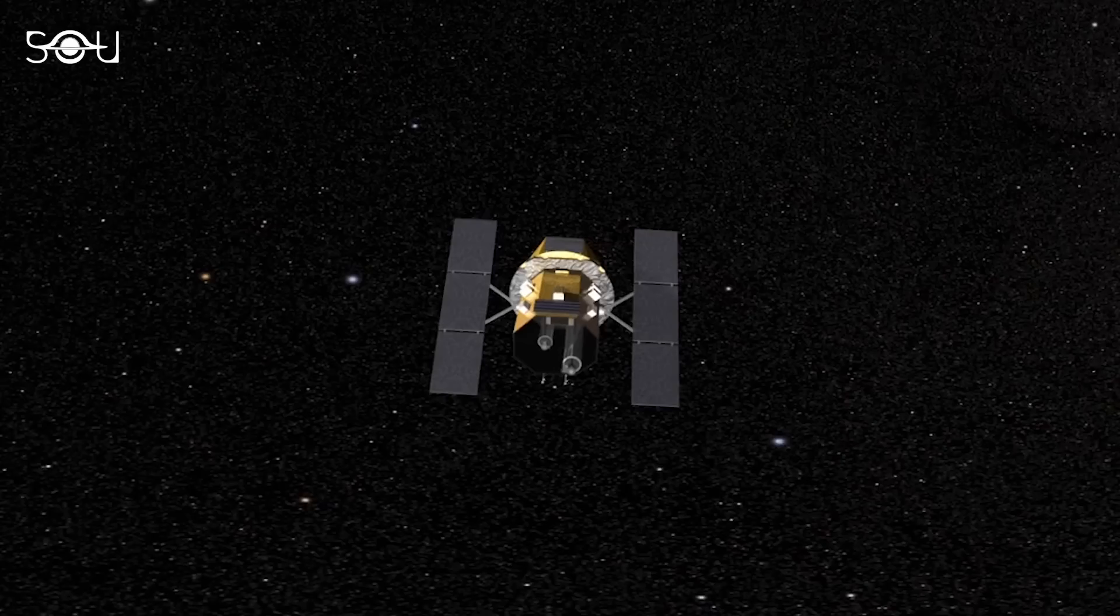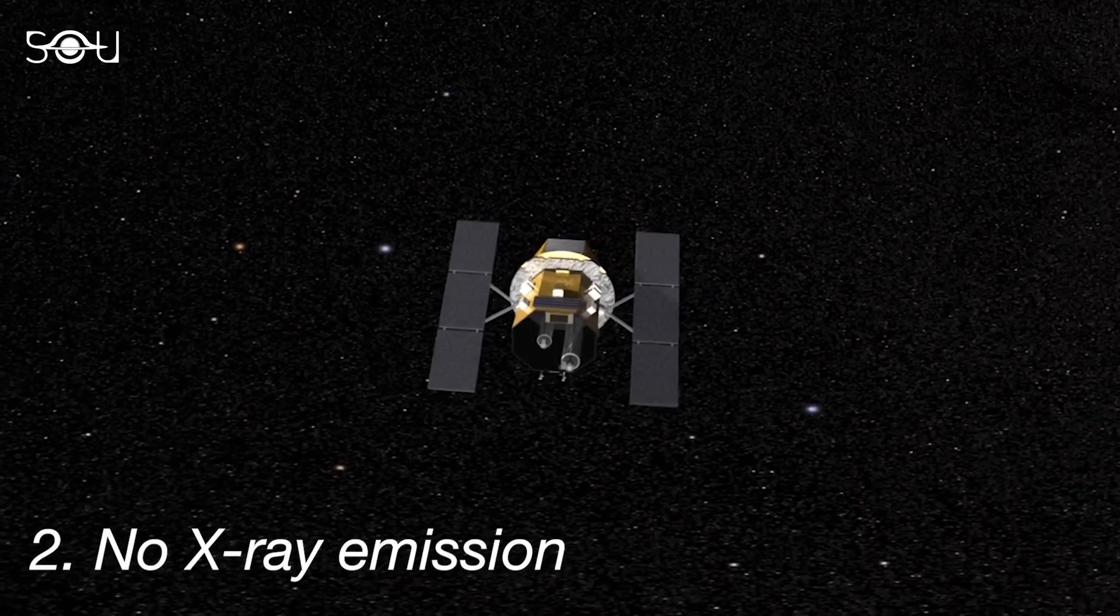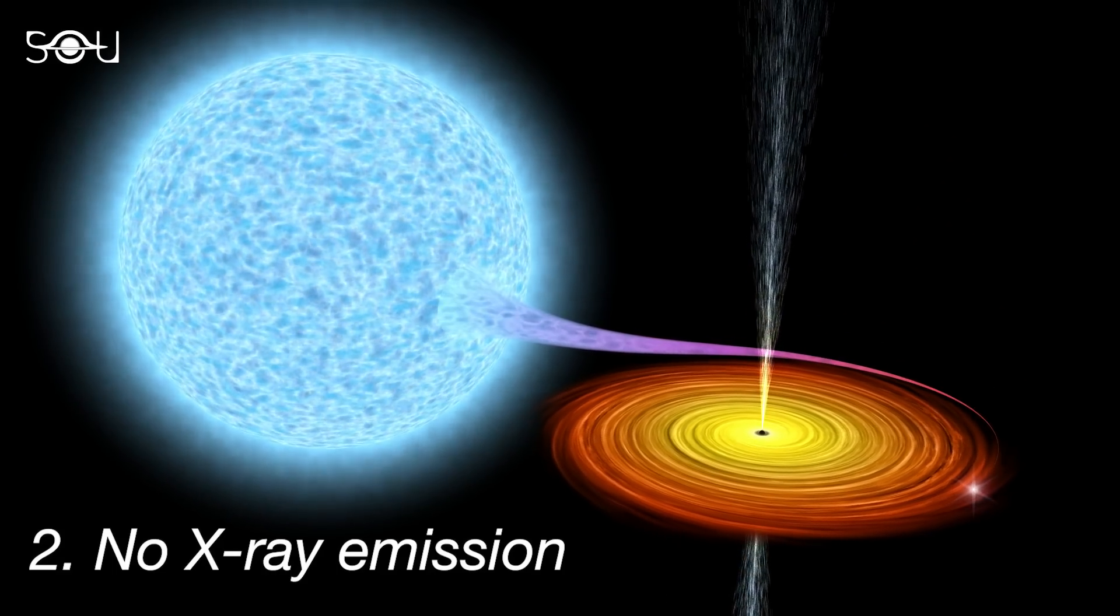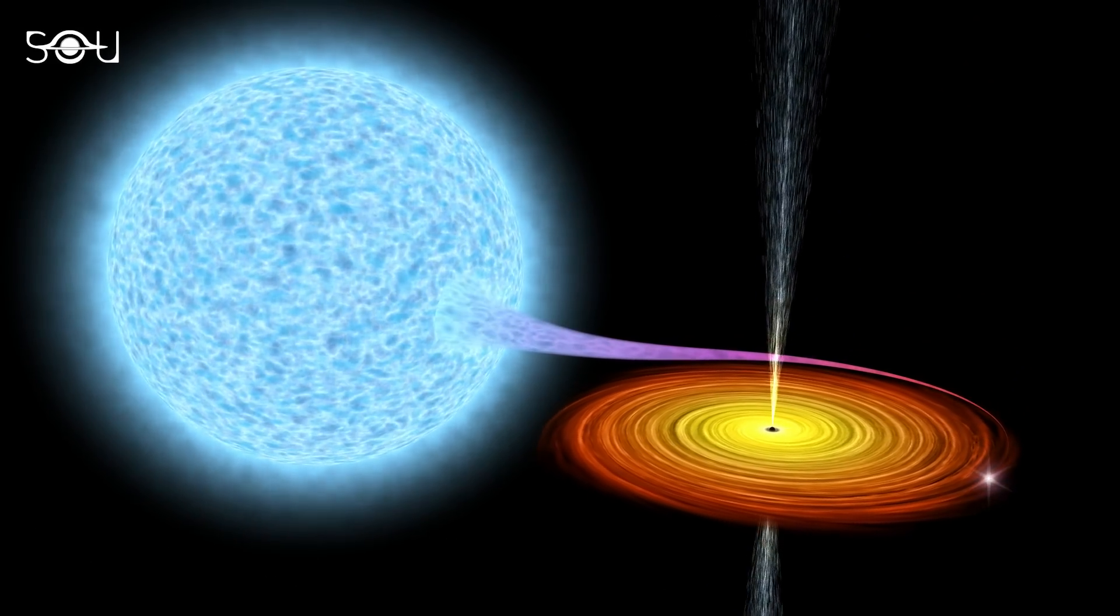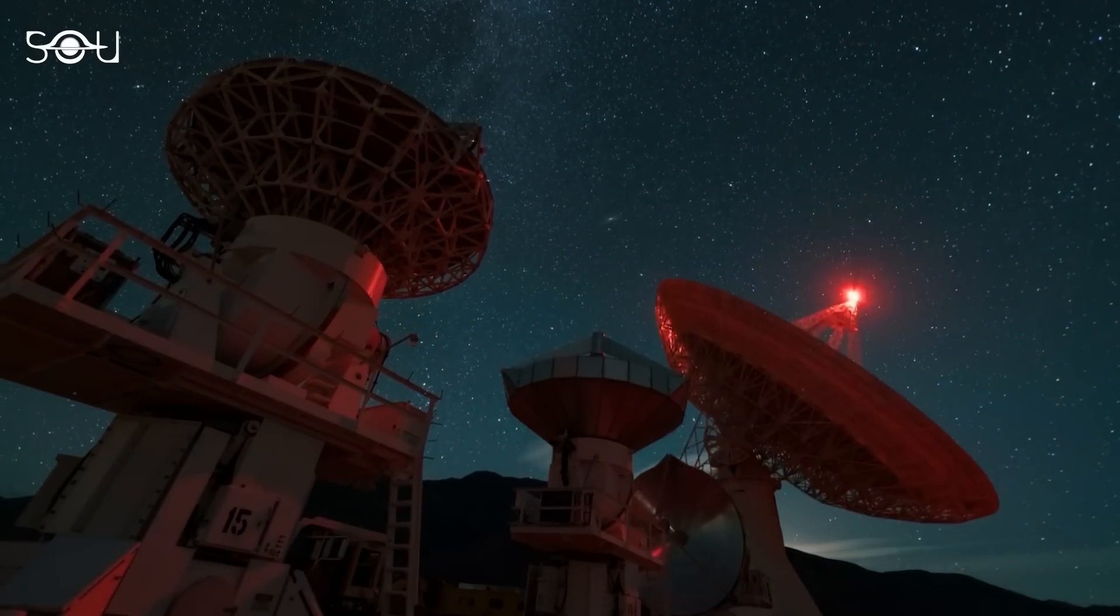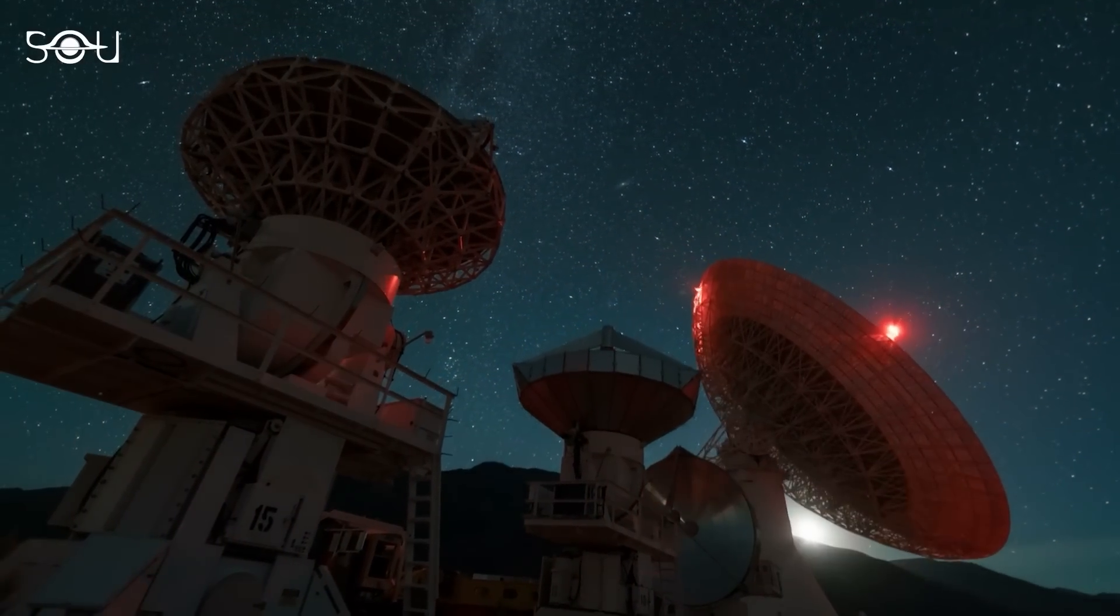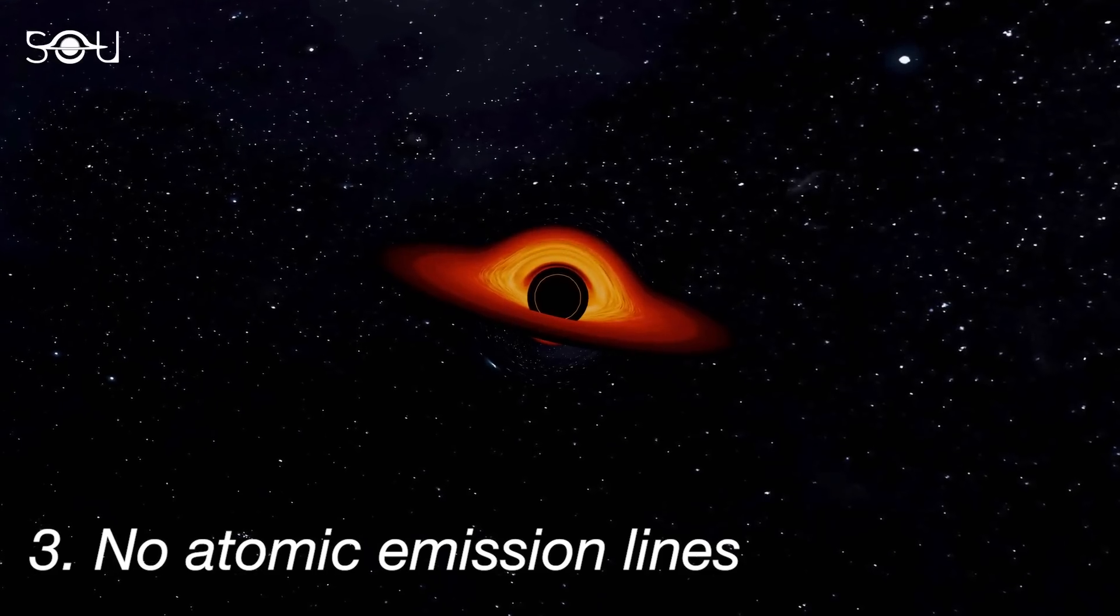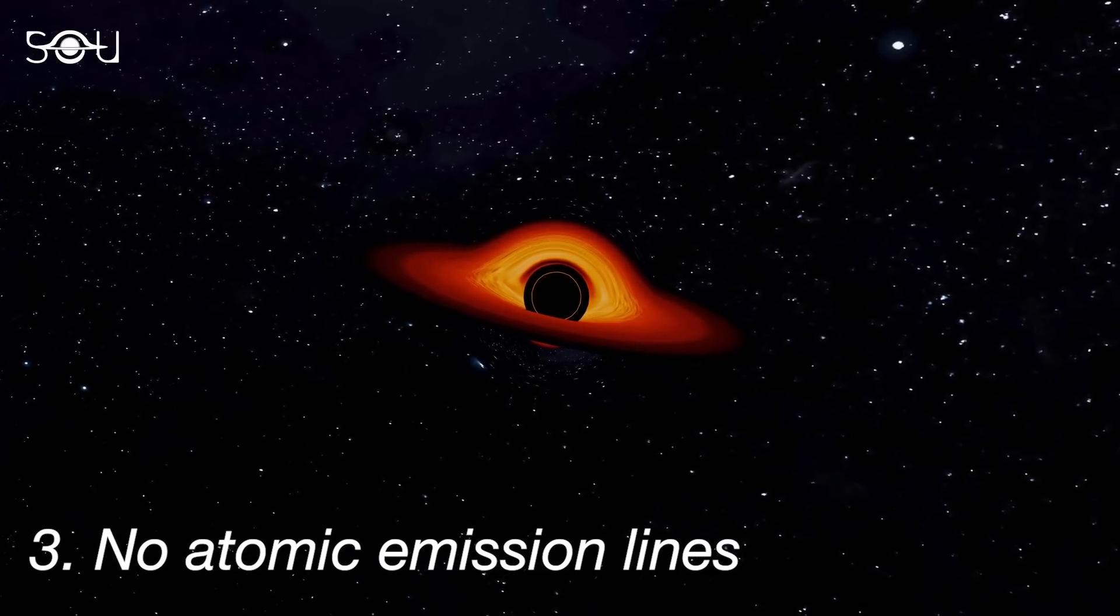Furthermore, no X-ray emission was detected with the Swift telescope, eliminating the possibility of matter accretion by a neutron star or black hole. Additionally, spectroscopic examination of the outburst revealed no atomic emission lines, further confirming the absence of a compact star or a black hole.